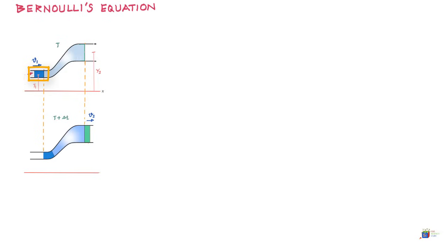At time t plus delta t, or when time delta t has elapsed, the situation is this. What you can observe is that this volume of liquid — this blue part — has pushed forward, and therefore an equal volume of liquid from the other end must have also moved ahead, represented by this green part. So this blue part has pushed forward and come over here, and as a result some liquid from this part pushed forward and came out over here.